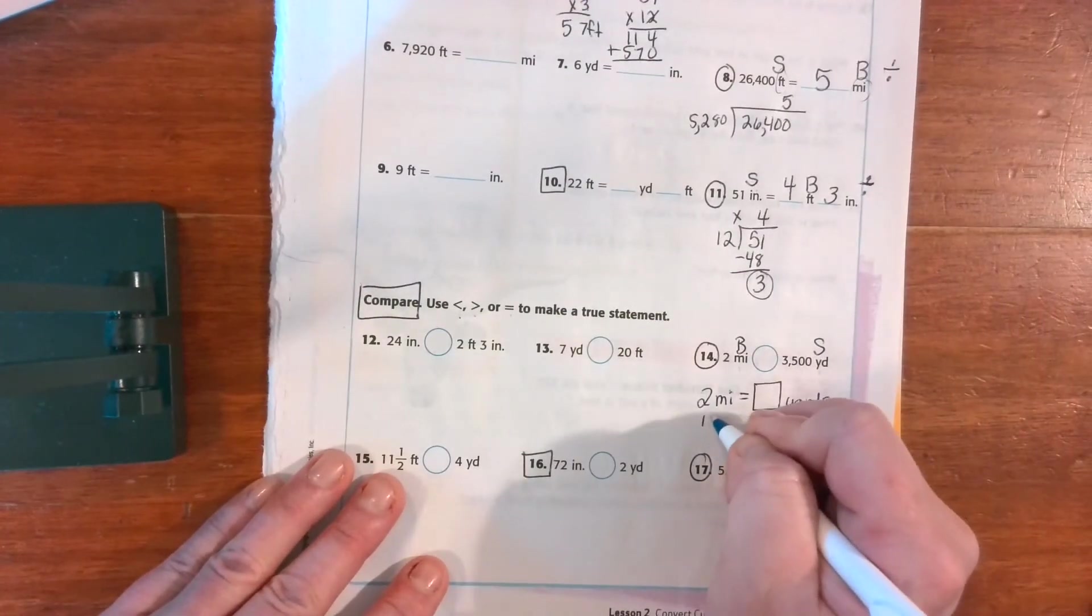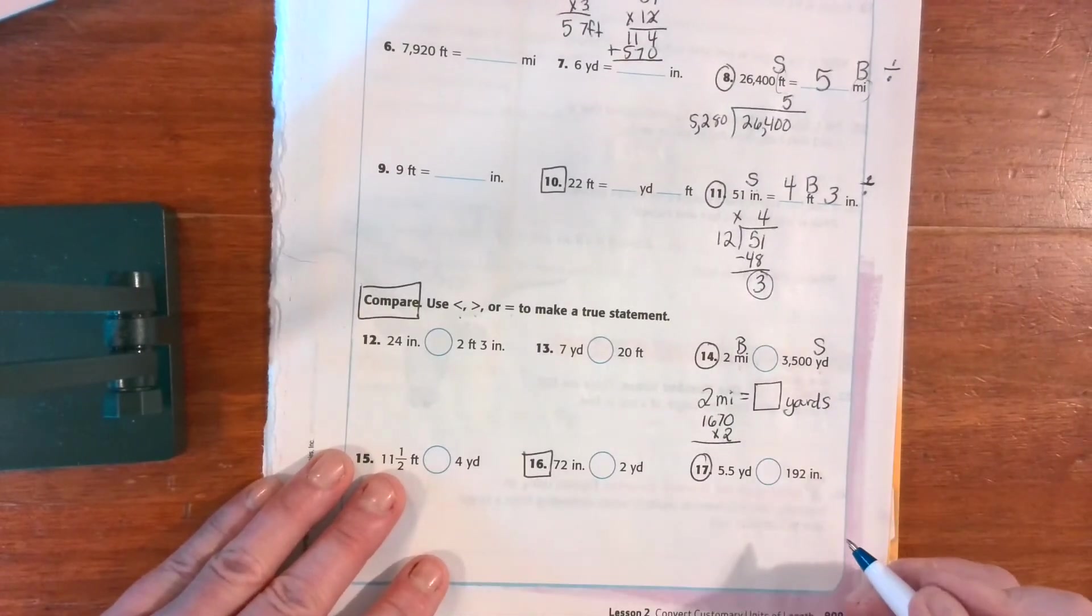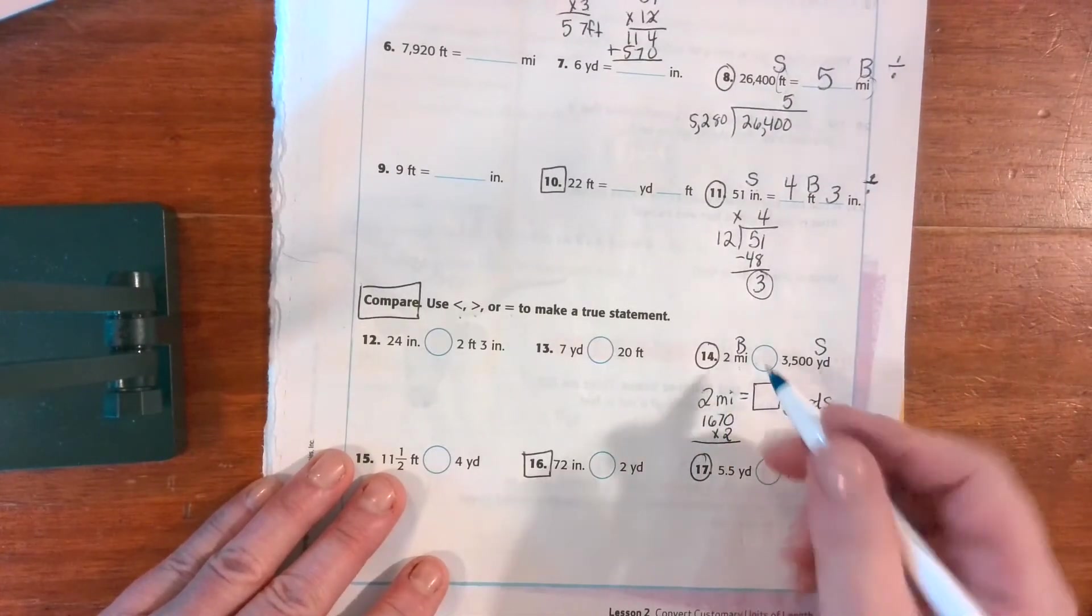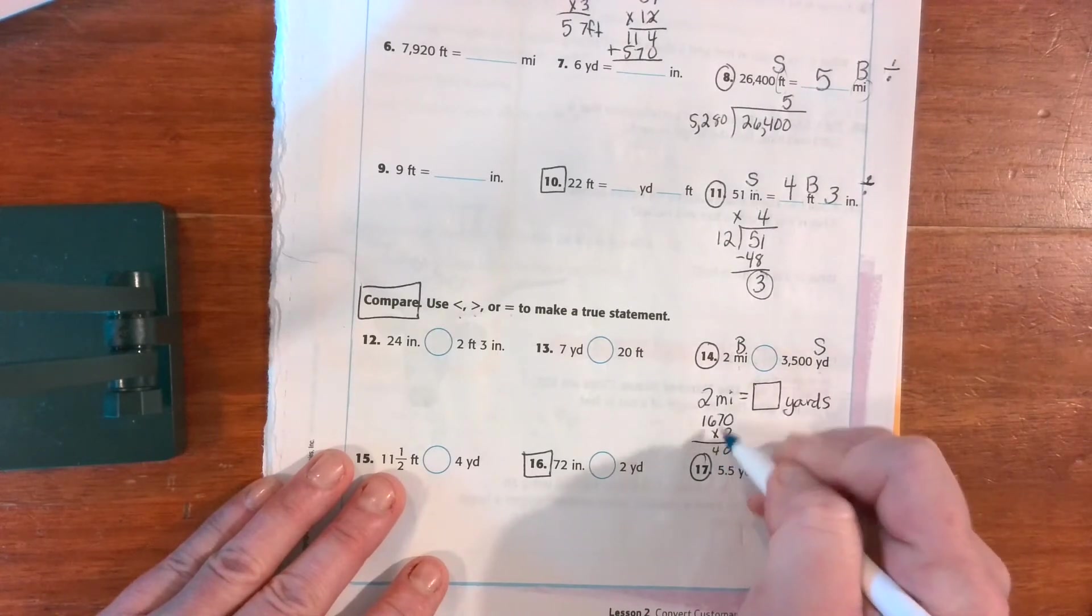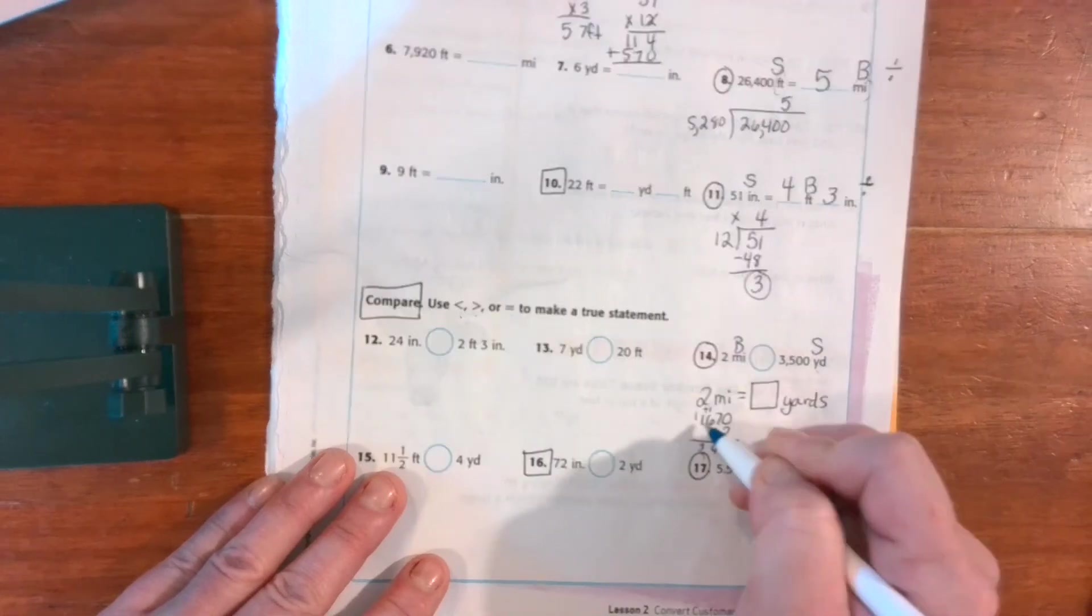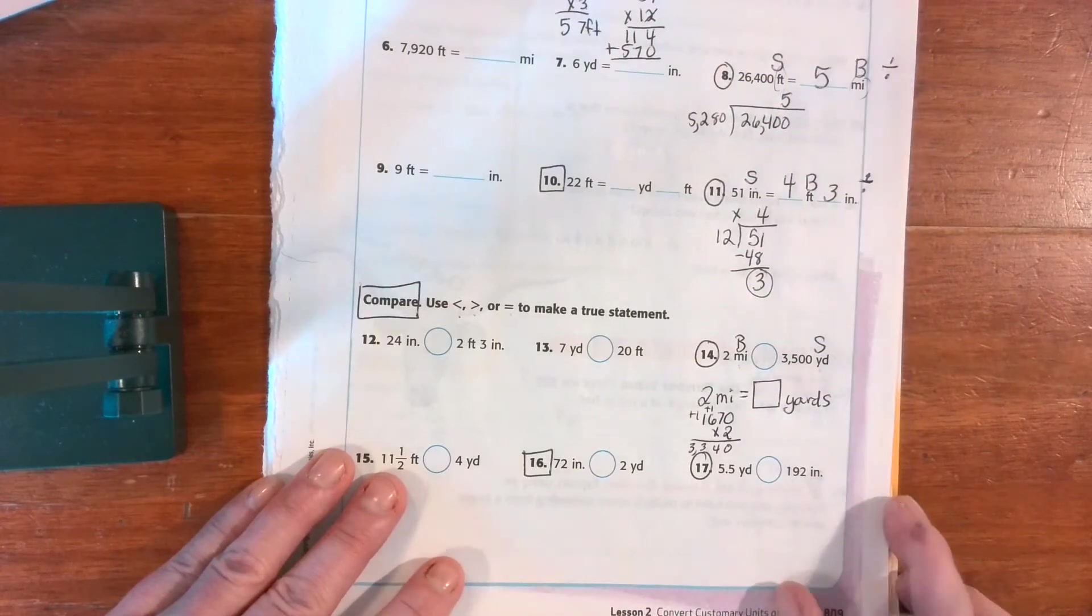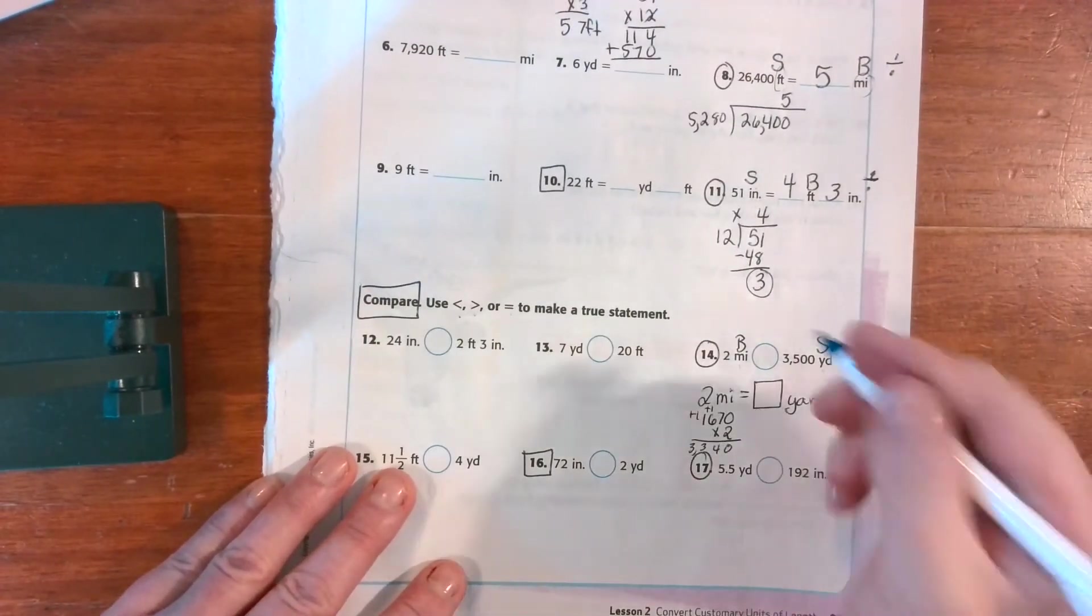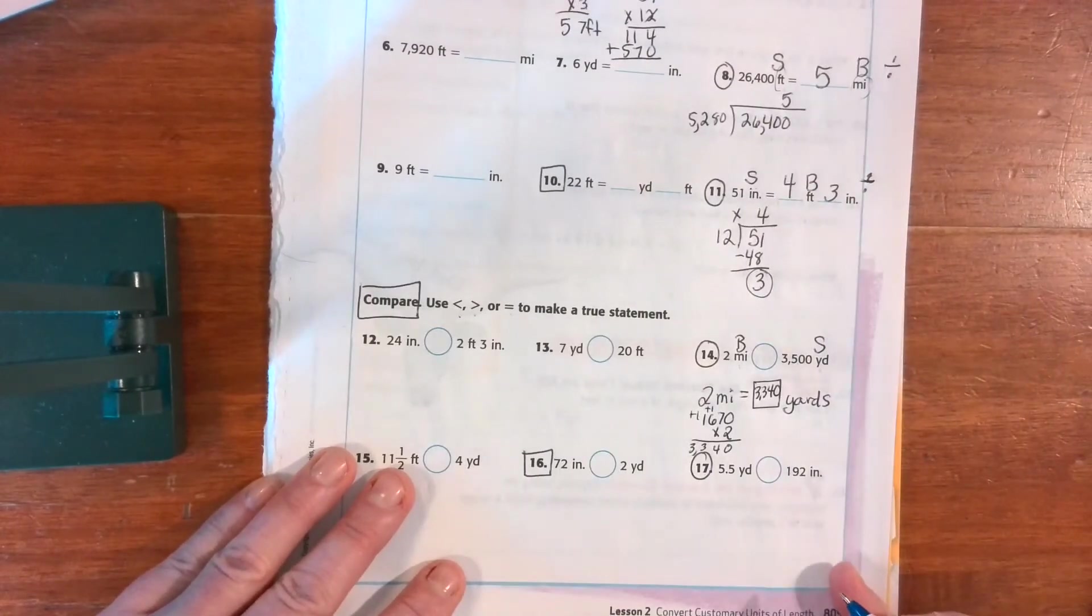So I need two groups of 1760 because I have two miles. Two times zero is zero. Two times seven is 14, carry the one. Two times six is 12, plus one is 13, carry the one. Two times one is two, plus one is three. Three thousand three hundred forty.